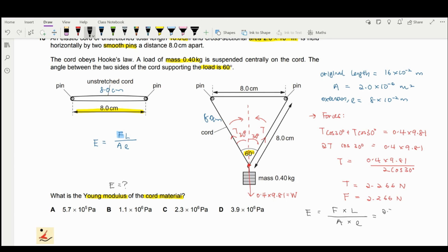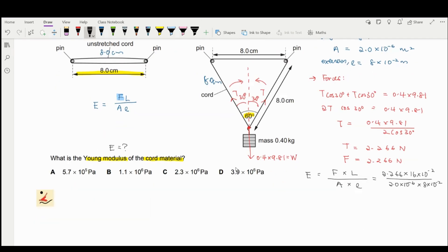So you have 2.266 times original length is 16 cm divided by the area and your extension. So you should have your answer as 2.3 times 10 to the power of 6 Pascal. Answer is C for this one.